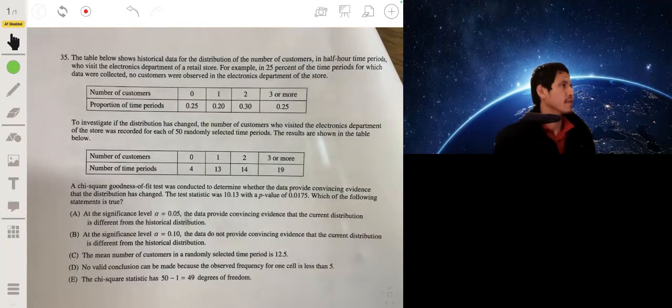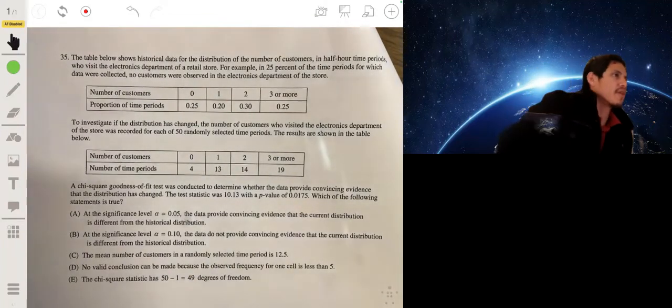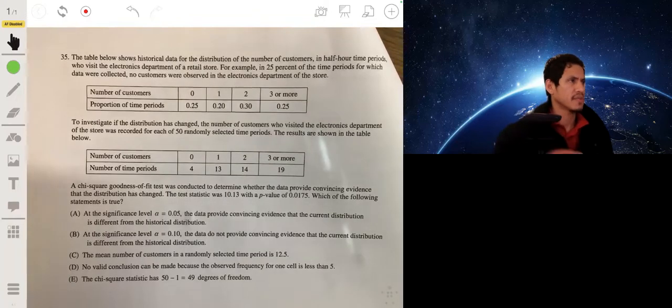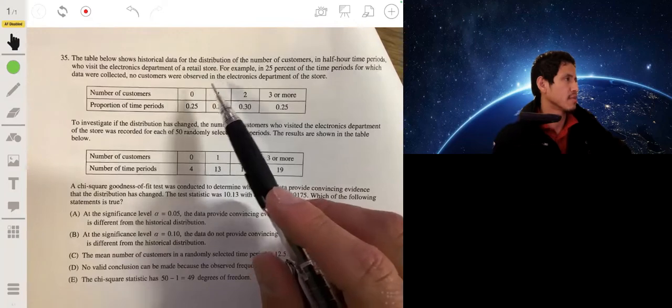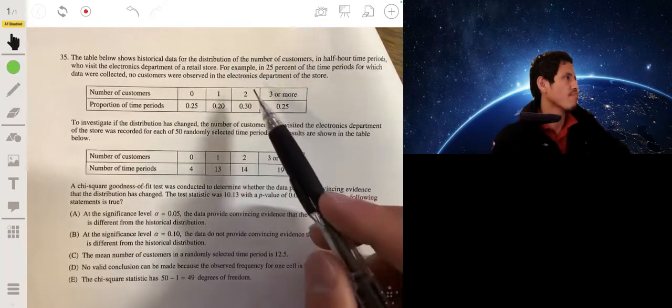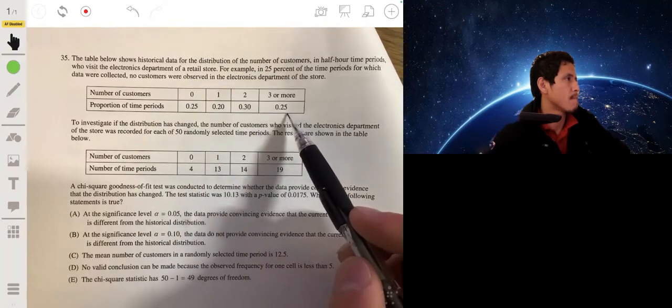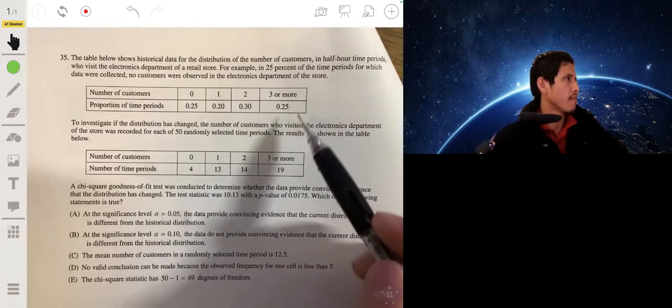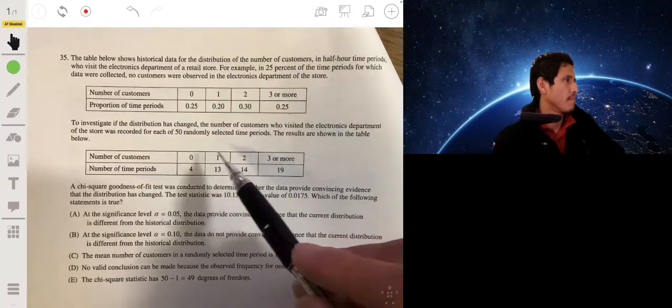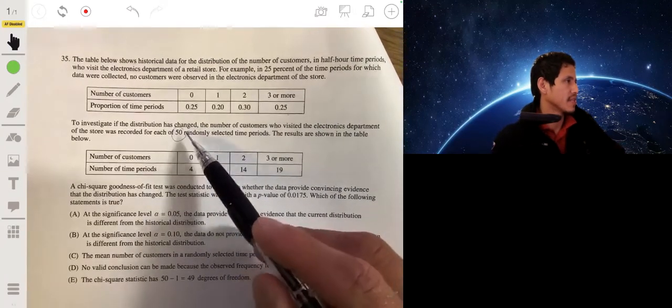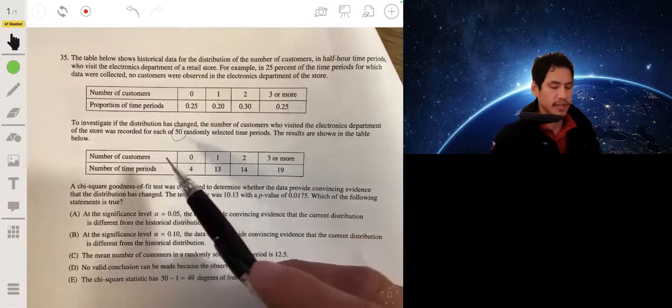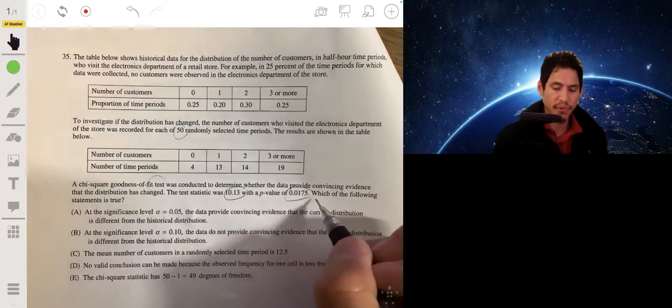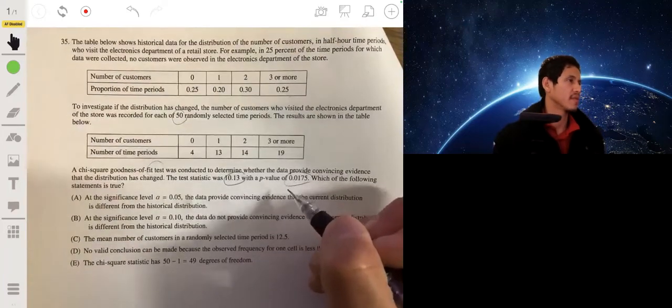Number 35. The table below shows historical data for the distribution of the number of customers in half-hour time periods to visit the electronics department of the retail store. For example, on 25 percent of the time periods for which data was collected, no customers were observed in the electronics department coming to the store. This is the number of customers distribution. The manager gave the distribution has changed over time. They took 50 random half-hour time periods and collected the data, and they conducted a chi-square test of goodness of fit. The test statistic was 10.13 and the p-value was 0.0175. Which of these statements is true?